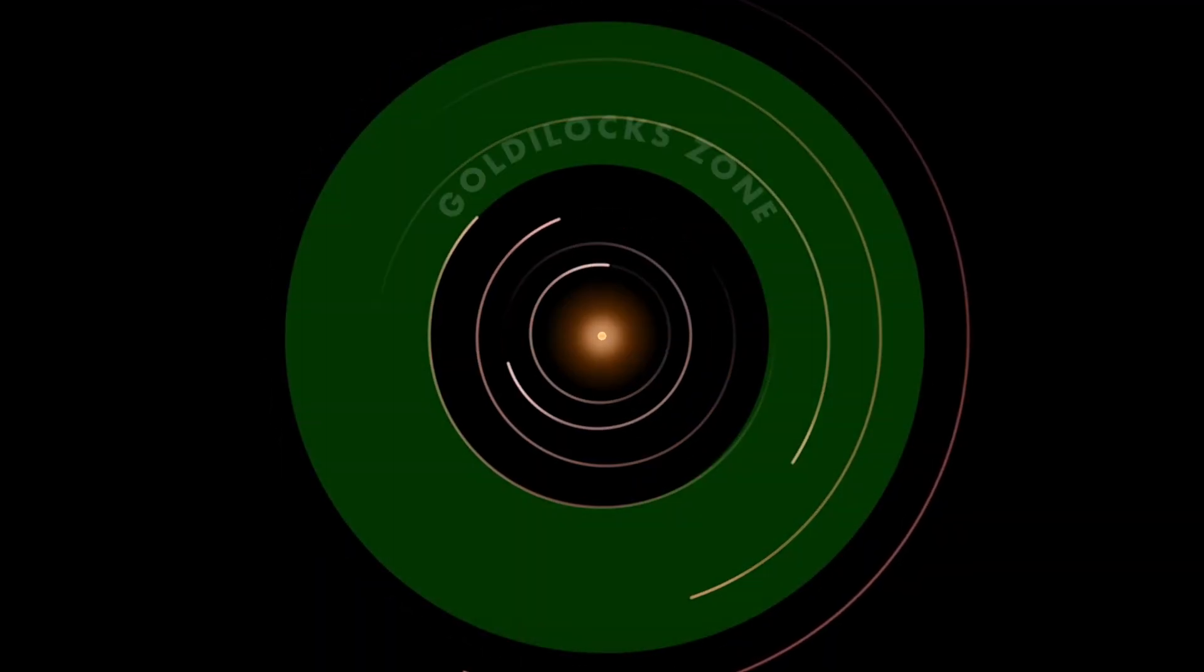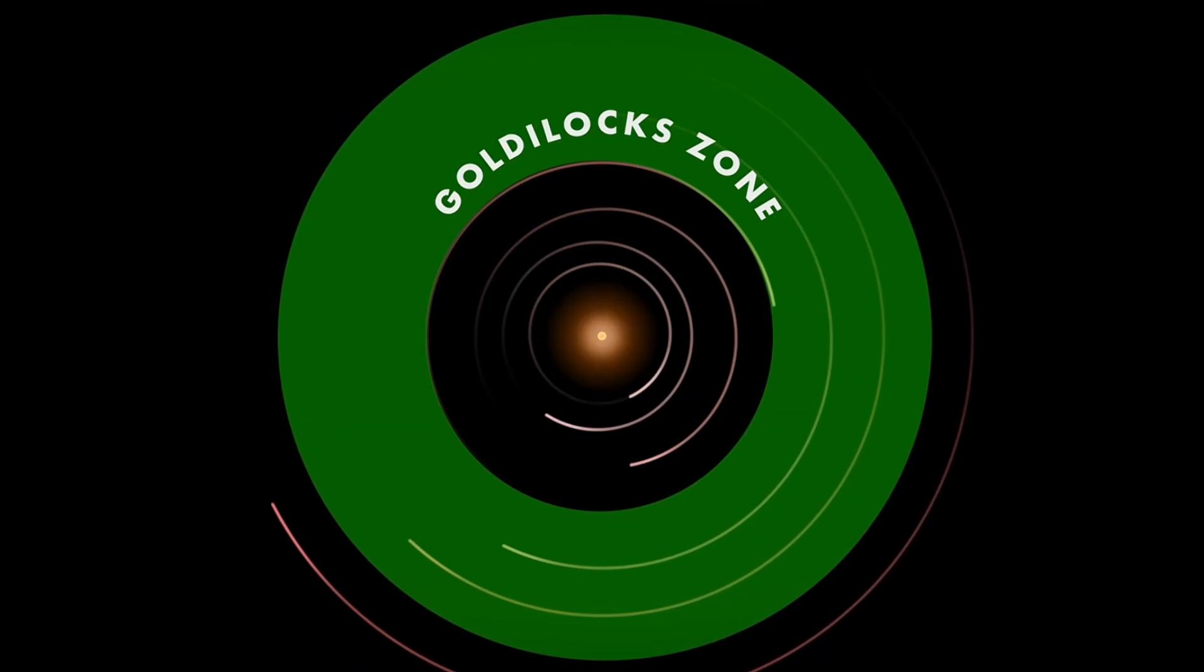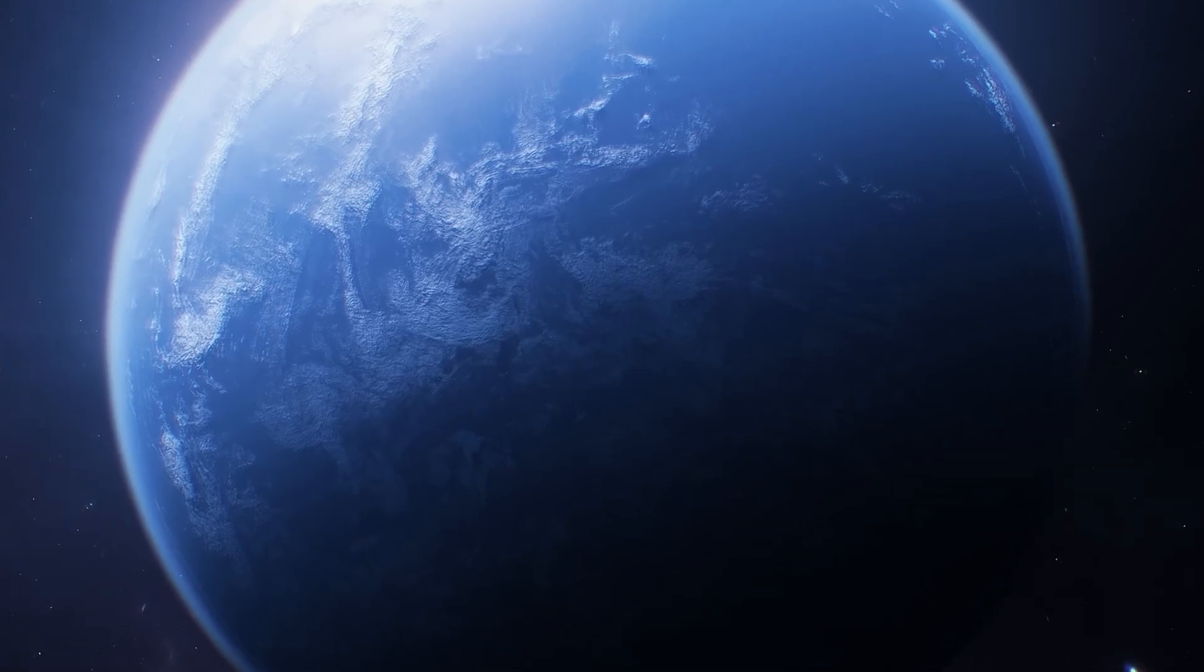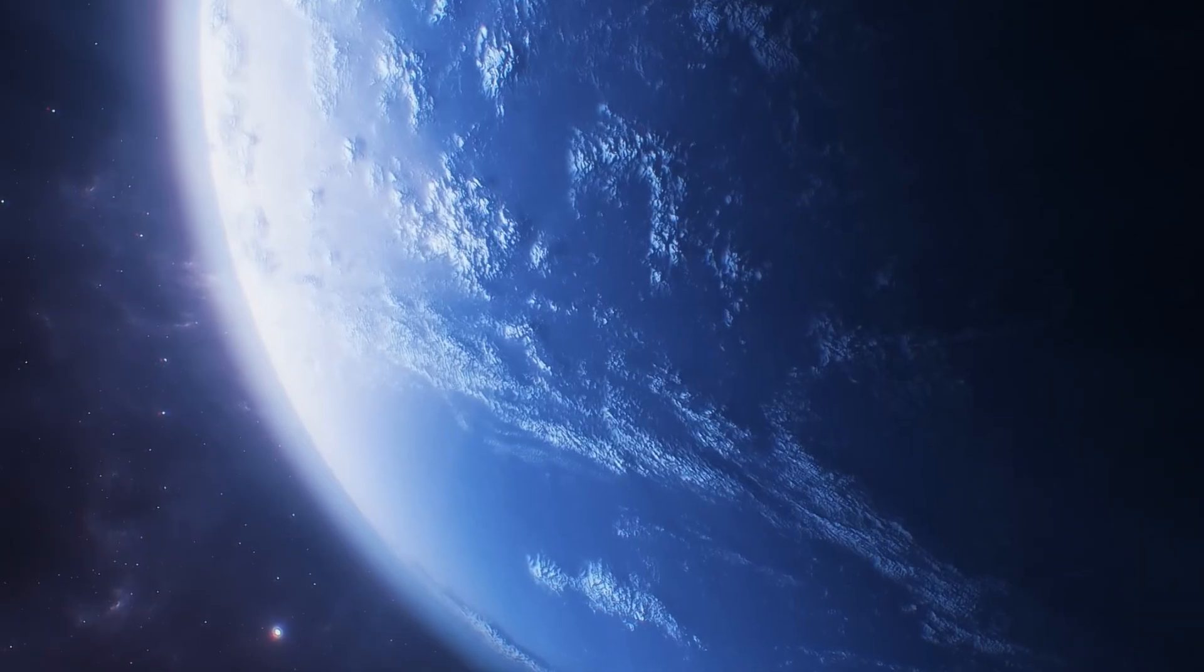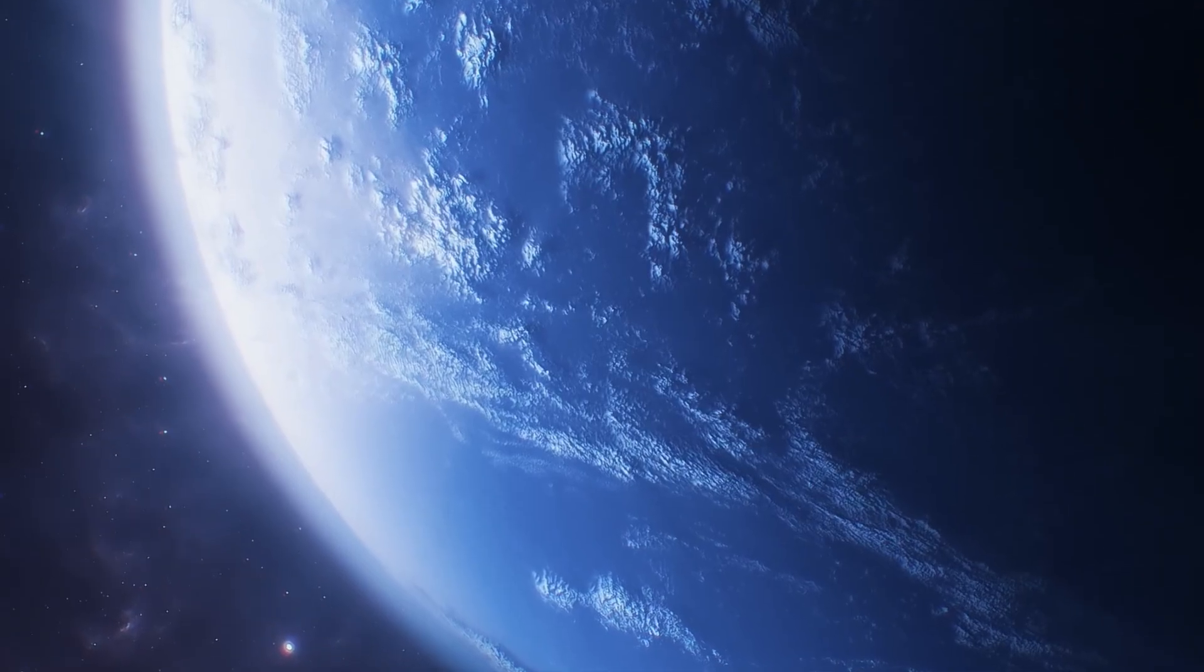This is an area around a star where temperatures might be just right for liquid water to exist. Why is this important? Because water is essential for life as we know it. Wherever we find water on Earth, we also find life, whether it's in a rainforest or deep under the ocean.